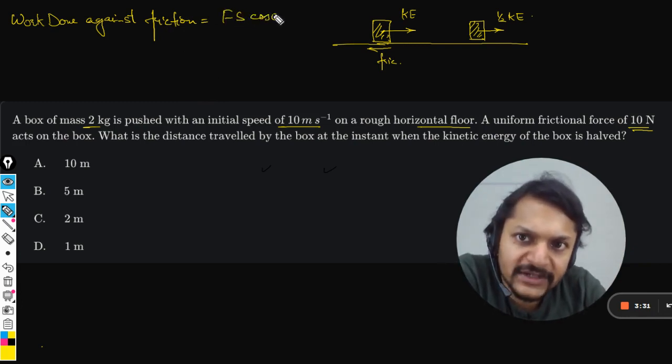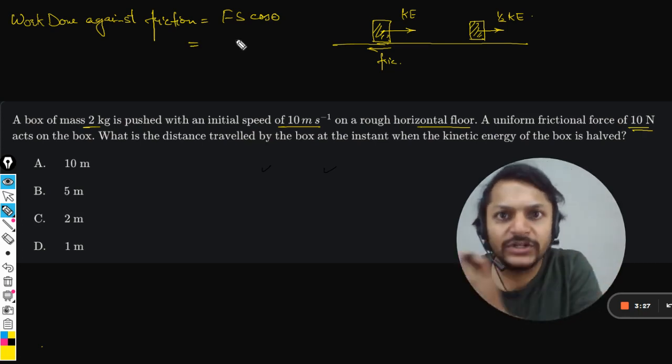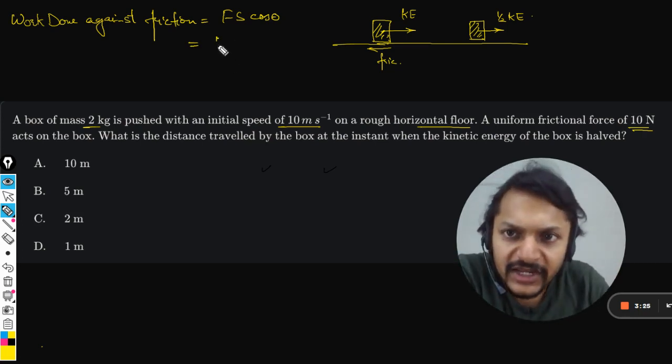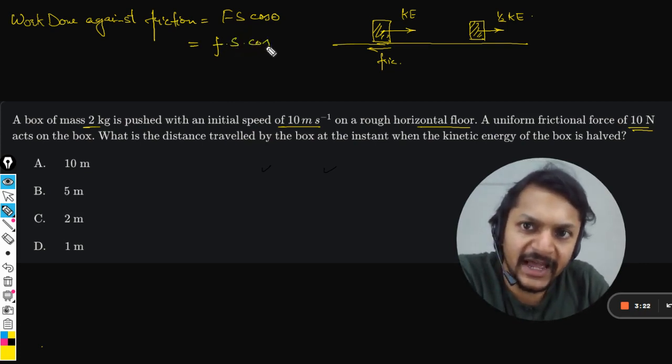Now the frictional force is acting towards the left, so it is F. The displacement will be S, and the angle will be cos of 180 degrees, because friction is backwards but the motion is in the forward direction.